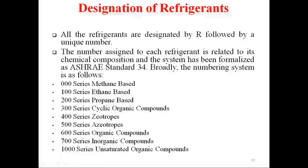Triple zero series: methane based. 100 series: ethane based. 200 series: propane based. 300 series: cyclic organic compounds. 400 series: zeotropes. 500 series: azeotropes. 600 series: organic compounds. 700 series: inorganic compounds. 1000 series: unsaturated organic compounds.